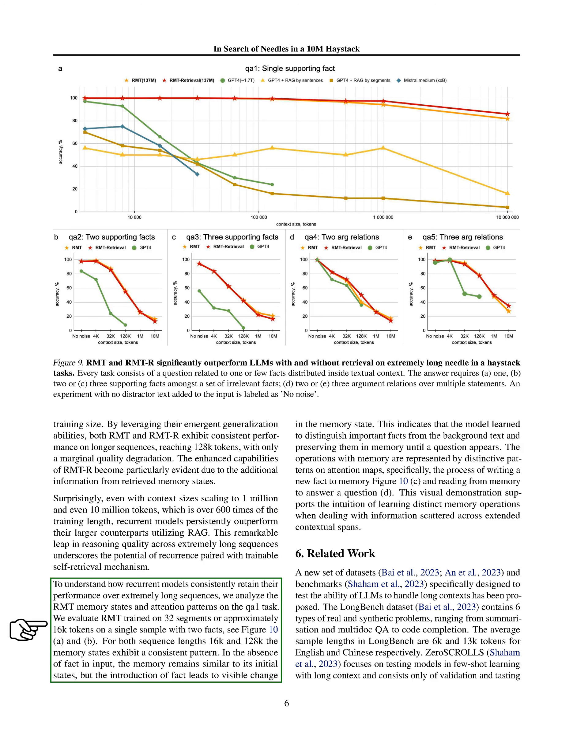To better understand how our models manage to maintain performance over long sequences, we analyzed the memory states and attention patterns on a specific task. We found that the memory states change visibly when new facts are introduced, indicating that the model learns to distinguish and retain important information. This was further supported by observing how the model writes new facts to memory and retrieves them to answer questions, showcasing the effectiveness of our approach in managing information over extended contexts.